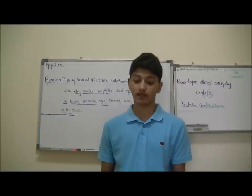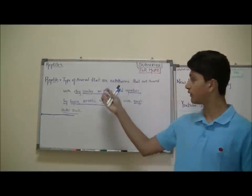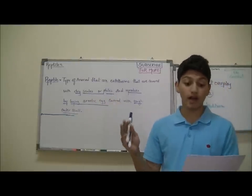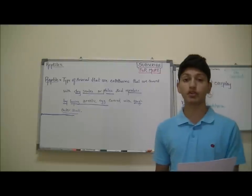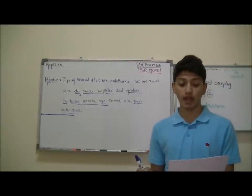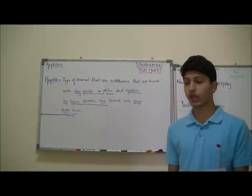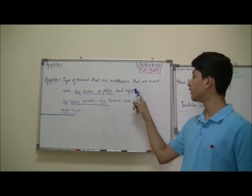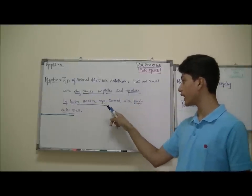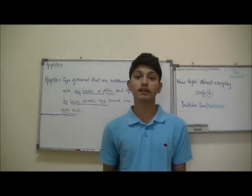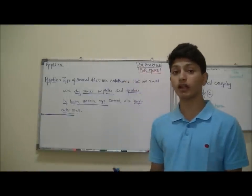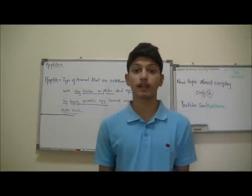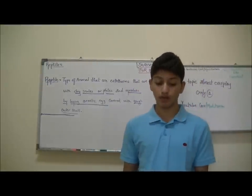So what does reptile basically mean? Reptiles are the type of animals that are ectotherms, covered with dry scales or plates, and reproduce by laying amniotic eggs covered with a tough outer shell. Notice that dry scales or plates, amniotic egg, and tough outer shell are underlined because these things are not included in other categories of animals — they are unique to reptiles.